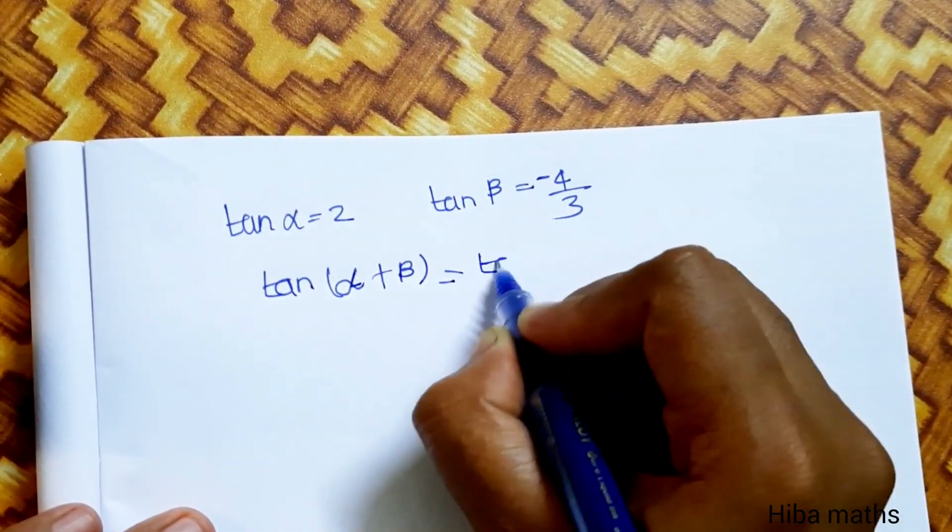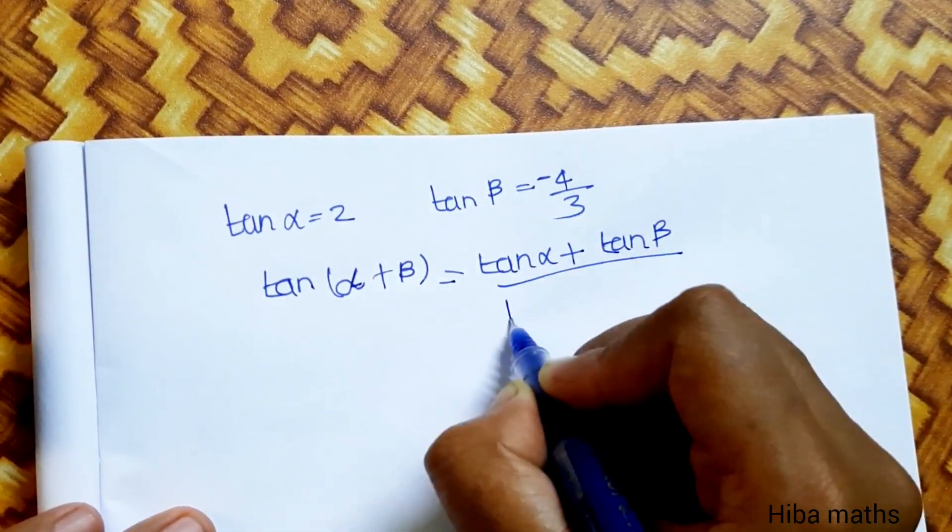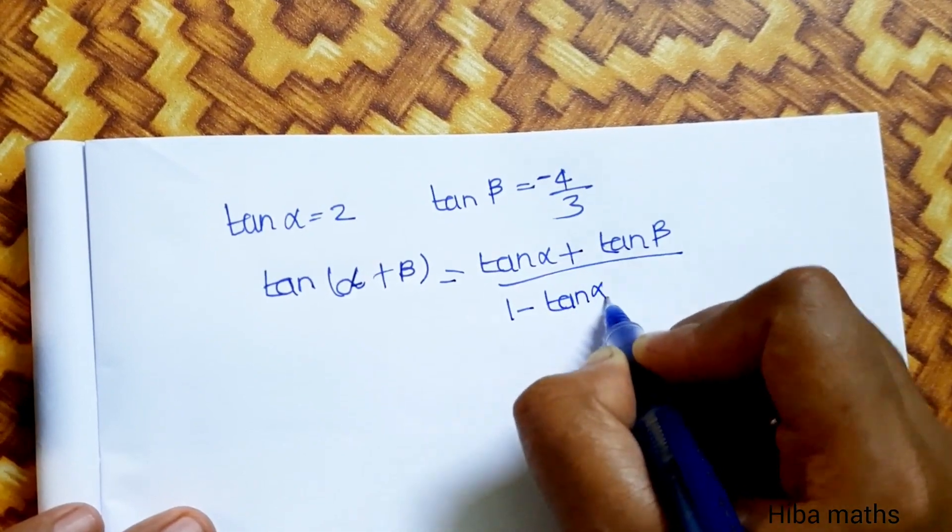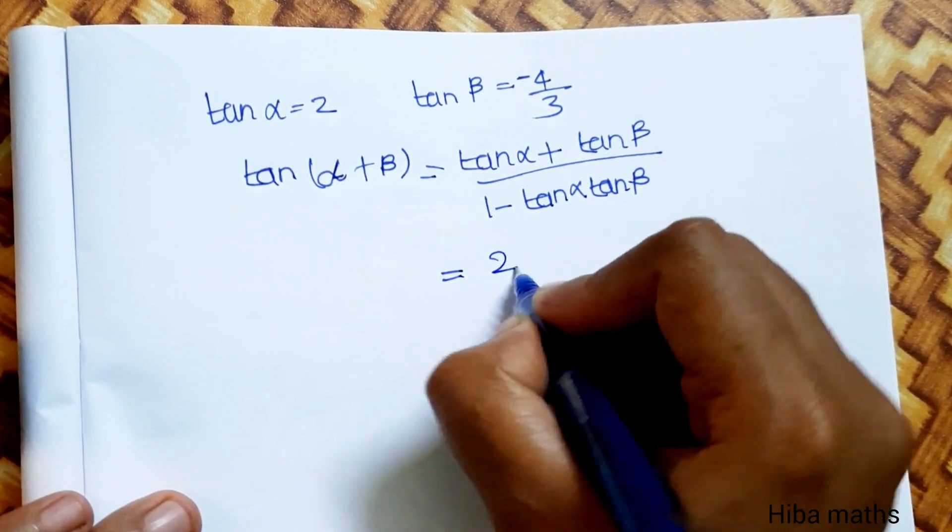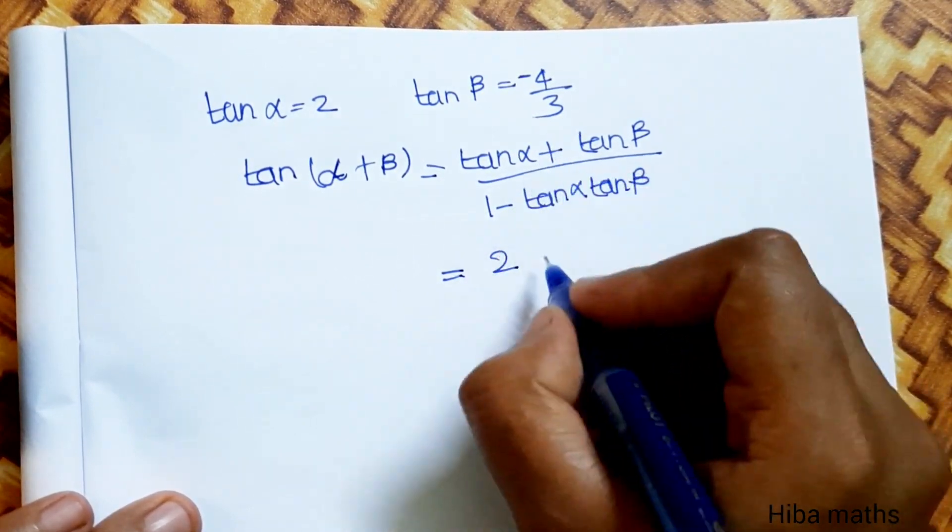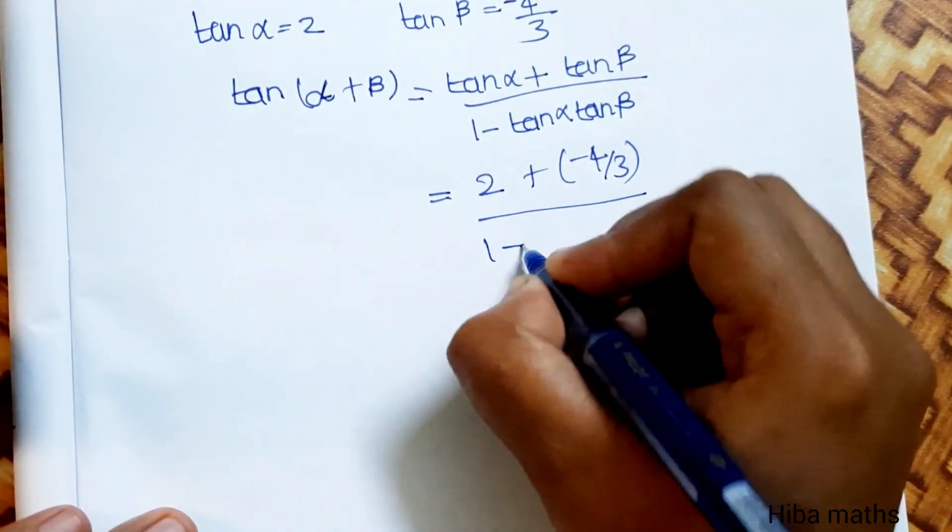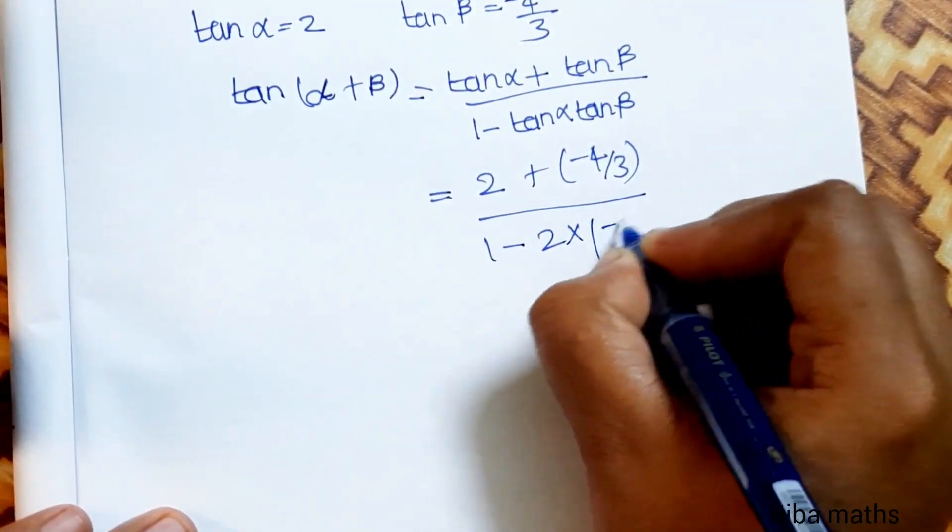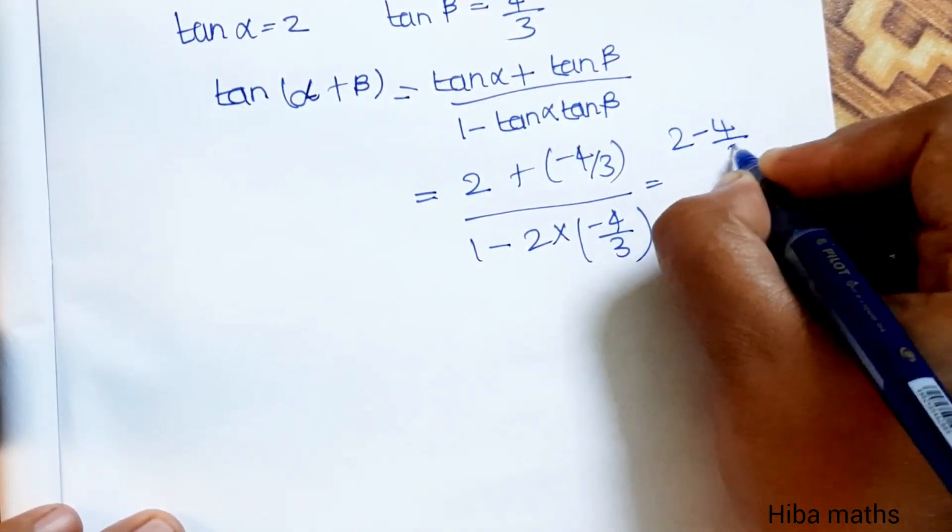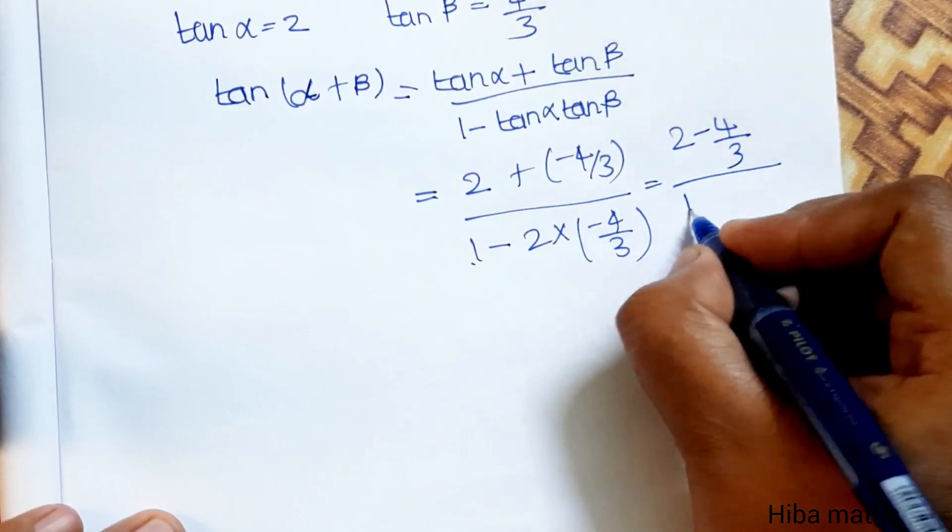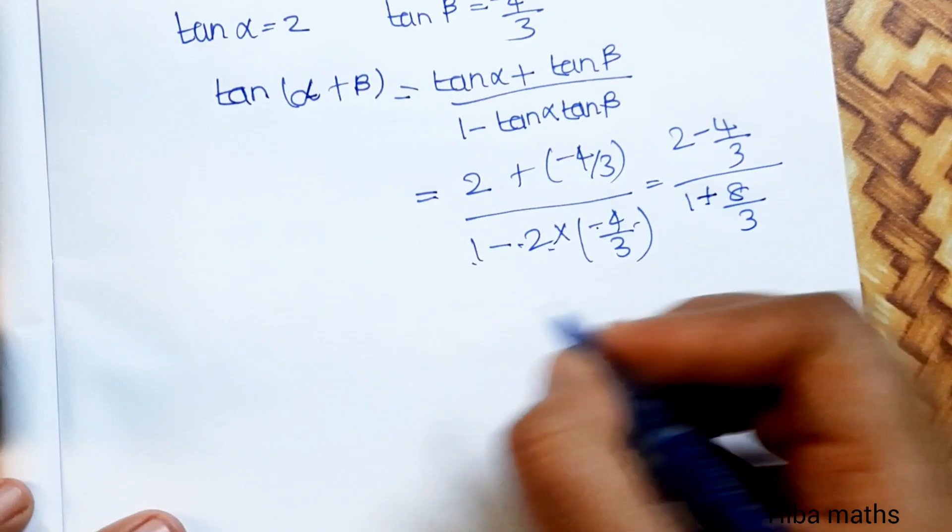Using the tan(A+B) formula: (tan A + tan B)/(1 - tan A tan B). Substituting: (2 + (-4/3))/(1 - 2(-4/3)), which equals (2 - 4/3)/(1 + 8/3).